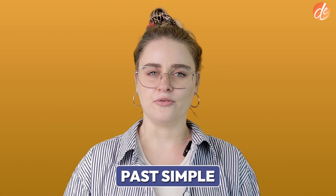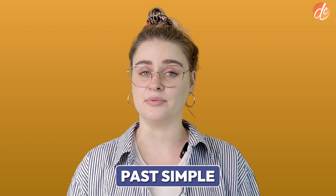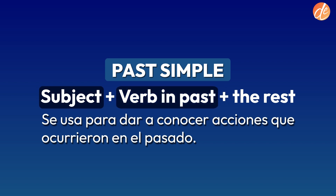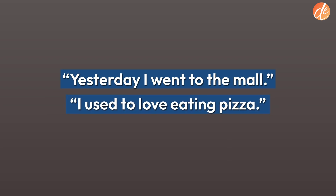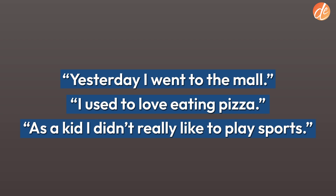Past simple. The structure of the past simple is very similar to the present simple: subject plus verb in the past tense and then the rest of the sentence. In English we have regular verbs, which end in -ED, and irregular verbs, which are completely irregular and you just have to learn them. The past simple is very common in English, so I recommend you learn the different conjugations. We use the past tense to talk about the past — for example: yesterday I went to the mall, I used to love eating pizza, as a kid I didn't really like to play sports.